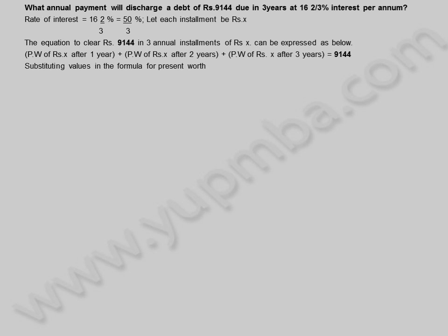Substituting values in the formula for present worth: X by (1 plus 50 by 3 into 100), plus X by (1 plus 50 by 3 into 100) whole square, plus X by (1 plus 50 by 3 into 100) whole cube is equal to 9144.